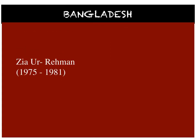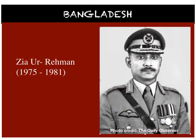General Ziaul Rahman took over Bangladesh's leadership in 1975. He formed his own Bangladesh Nationalist Party. Under him, the ban on political parties was lifted and he also restored freedom of press and speech. However, in 1981, Ziaul was assassinated by dissident elements of the military led by General H.M. Irshad, the same way he had acted against Sheikh Mujib.